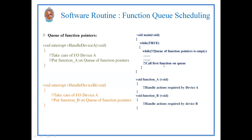The first function pointer is read and that service is provided. Suppose function_A wants service — it calls that function. So you write the functions for devices A and B: void function_A handles the actions required by device A, and void function_B provides the service required by device B. This is how you implement the software routine for function queue scheduling algorithm.